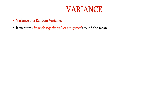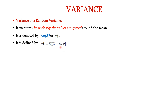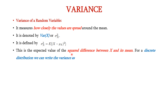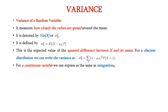Next let us see about variance. It measures how closely the values are spread around the mean. It is denoted by VAR of x or sigma squared x. It is expressed as sigma squared x is equal to E of x minus mu x whole square. This is the expected value of the squared difference between x and its mean. For a discrete distribution we can write the variance as summation of x minus mu x whole square into p of x equal to x. For a continuous variable we can express the same equation as integration: variance of x is equal to integration of x minus mu whole square into f of x dx.